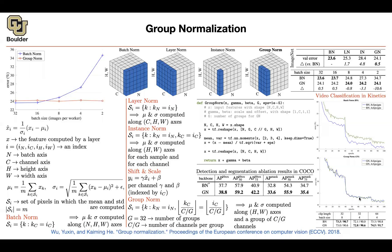So we learned two powerful techniques today: non-local operations and non-local blocks, and that batch norm is not always the best method — it depends on your network and batch sizes. If your batch sizes are small and you're dealing with detection, segmentation, or video, group normalization is a better choice than batch normalization.